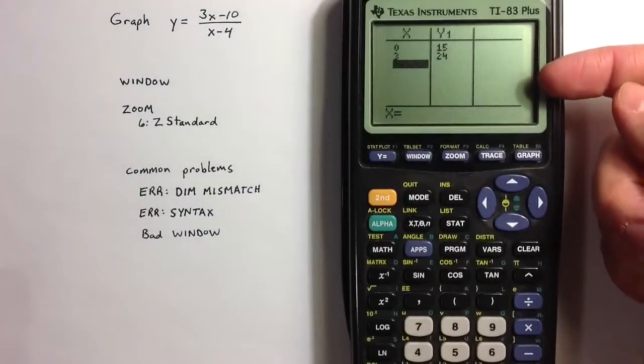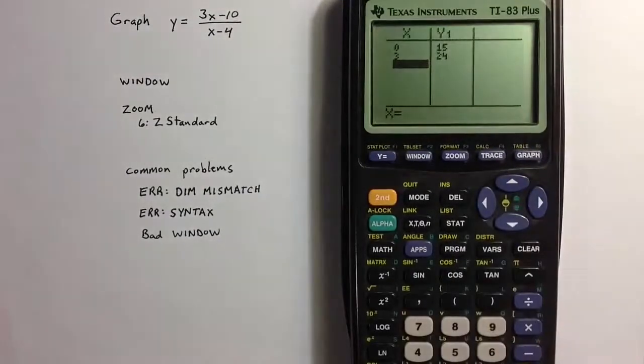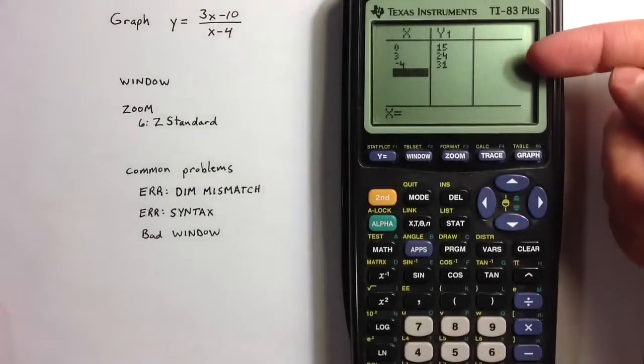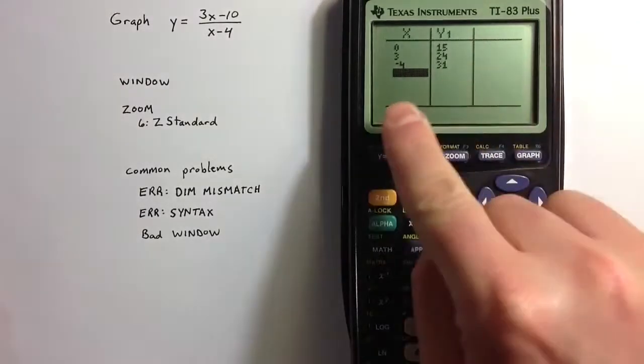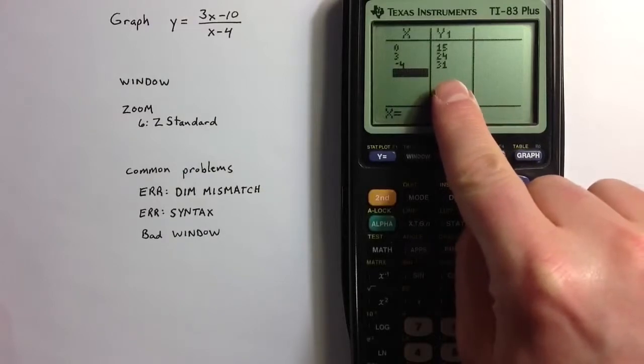So I can get a sense of x, y positions that make sense and that would maybe be useful in terms of setting the window. So at negative 4, the value of the function is up at 31.